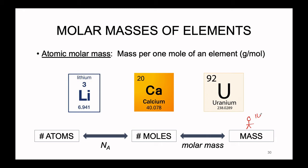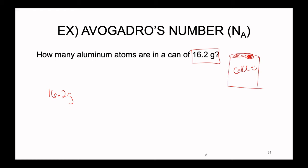We know that the mass is 16.2 grams. We want to figure out how many atoms there are in the can. In order to do so, we must first use the molar mass to calculate the number of moles, and then use Avogadro's number to calculate the number of atoms. If we know the atomic molar mass of aluminum, we can figure this out. All we have to do is look at the periodic table — the periodic table has all atomic molar masses.